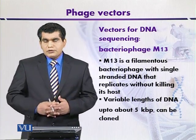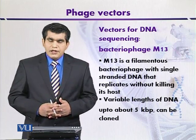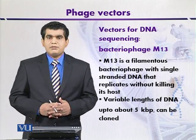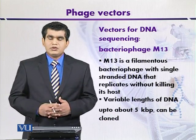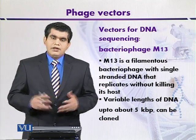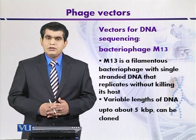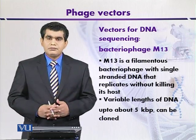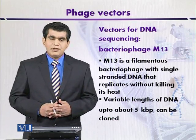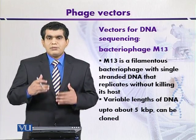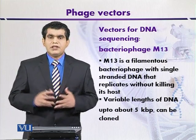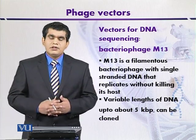If we want to clone double-stranded DNA into an M13 vector, the M13 single-stranded DNA must first be converted into double-stranded form, which is the double-stranded replicative form. Naturally, when filamentous phages like M13 infect their host organism, their single-stranded DNA during replication can be converted into this double-stranded replicative form, which can then be recognized by different restriction endonucleases — something that is not possible with single-stranded DNA.